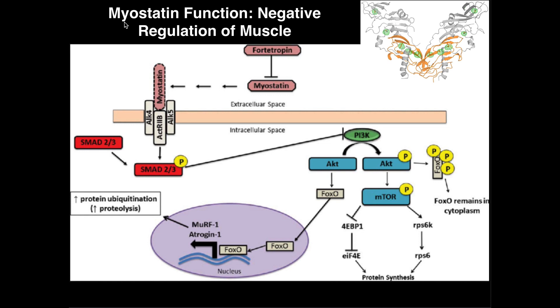So it turns out that myostatin actually has an important function in keeping muscles from just growing out of control. It keeps muscle growth in check and allows the body to only get growth whenever it's absolutely necessary, such as when you're doing heavy resistance training.